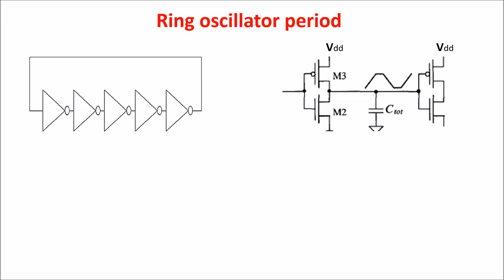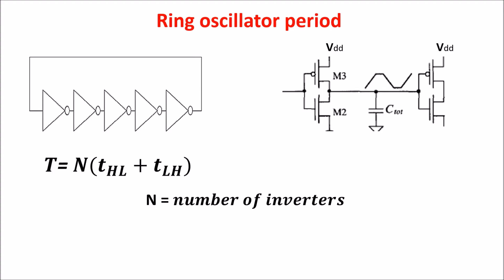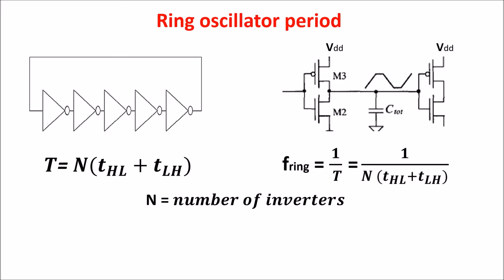Now that we understand the inverter delay, we can define the oscillation period of the ring oscillator. This is simply the time for an inverter output to go from logic 1 to logic 0, plus the time to return to logic 1, multiplied by the number of inverters N. So the period is (T_HL + T_LH) × N, and the frequency is the inverse of the period. The more inverters we have, the lower the frequency.